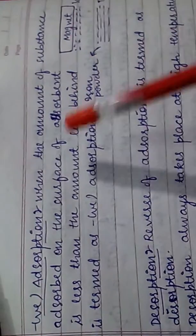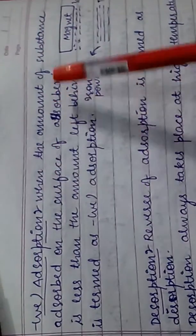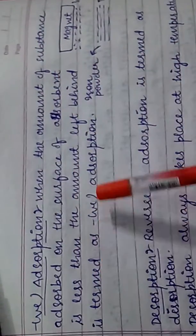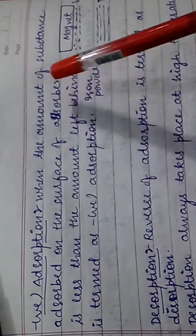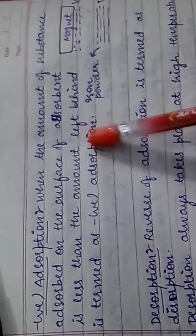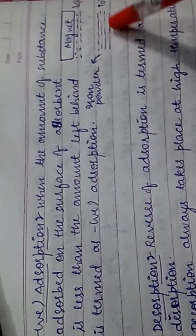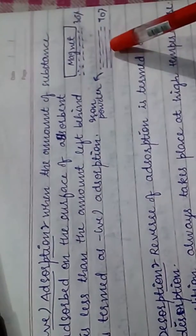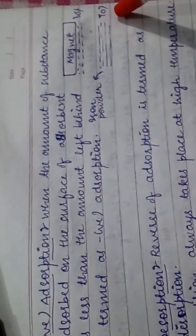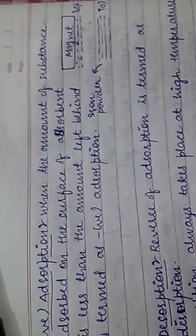Similarly, in negative adsorption, when the amount of substance adsorbed on the surface of an adsorbent is less than the amount left behind, it is termed as negative adsorption. For example, if 30% of iron powder is adsorbed and 70% is left behind, it is an example of negative adsorption.